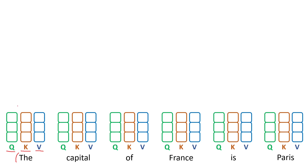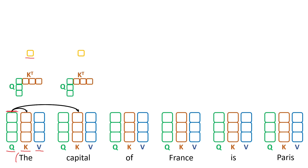The next step in the computation was to take the query of the first token and do a dot product with the key of the same token, and what we obtain in the end is a scalar value. Then we take the exact same query tensor and do a dot product with the key of the second token, and again we obtain a scalar.